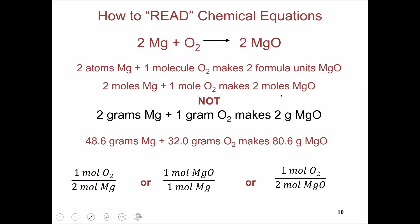How to read chemical reactions? What does it mean to describe a reaction between magnesium and oxygen like this? It reads that two atoms of magnesium reacts with one molecule of oxygen to make two formula units of magnesium oxide.